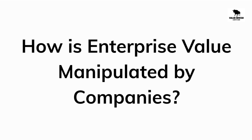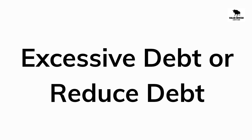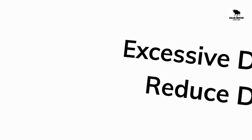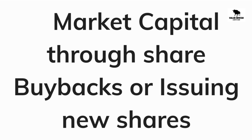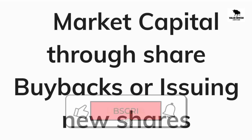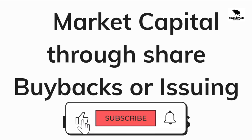How is enterprise value manipulated by companies? Companies can manipulate enterprise value through various means. They can take on excessive debt or reduce debt levels to artificially inflate or deflate the EV. They can also manipulate cash and cash equivalents by inflating or deflating reported cash balances. Additionally, companies can inflate or deflate market capitalization through share buybacks or issuing new shares. As investors, it's important to be cautious and thoroughly analyze a company's financial statements to ensure that the EV is not being manipulated.